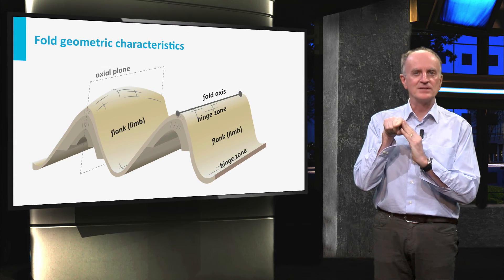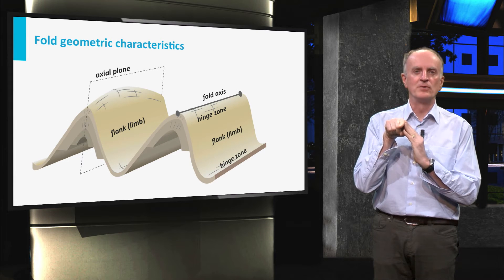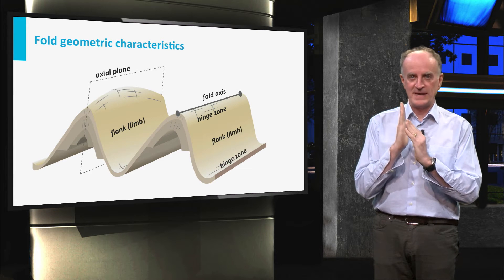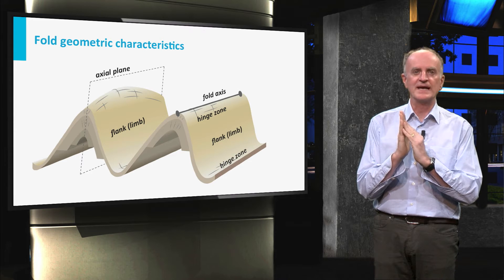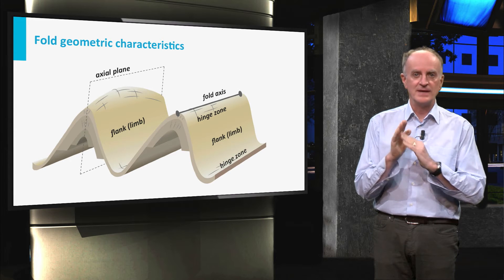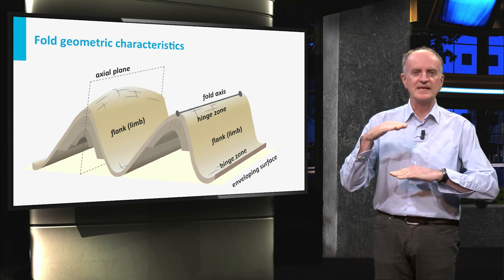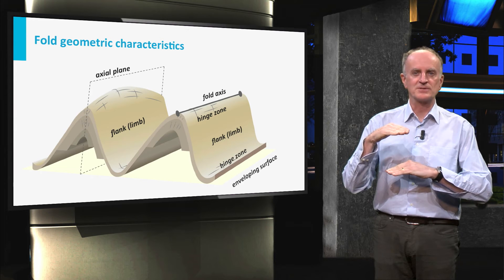The line parallel to the hinge zone is called the fold axis. The plane which contains the hinge zone of the folded layers is called the axial plane. The surface connecting the hinge zone is the enveloping surface.